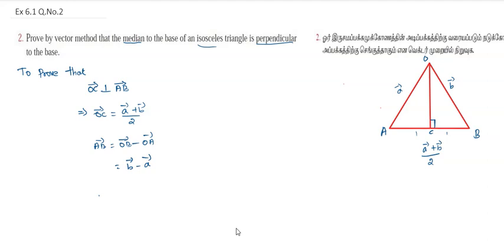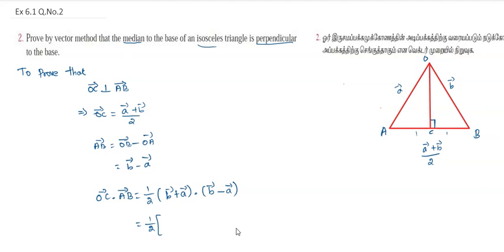Now we calculate OC vector dot AB vector. OC vector is (A plus B) divided by 2, and AB vector is (B minus A). So the dot product equals one-half times (B vector plus A vector) dot (B vector minus A vector), which equals one-half times (modulus of B vector squared minus modulus of A vector squared).